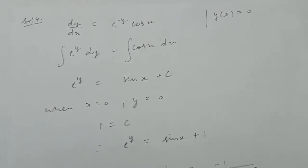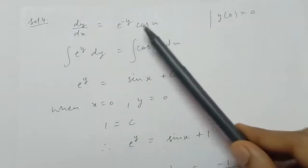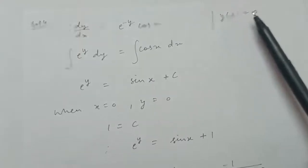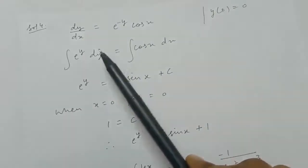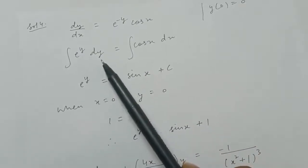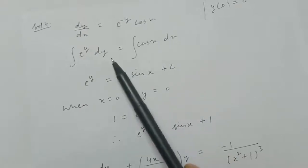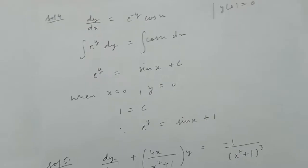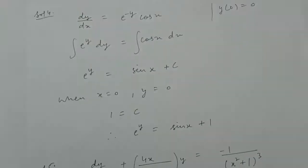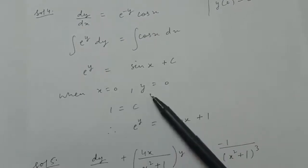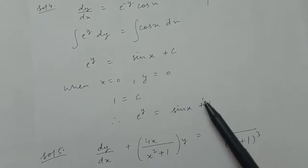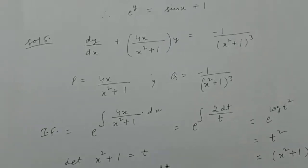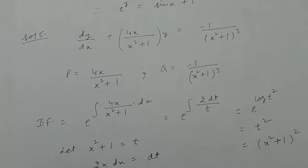Question four: solve to get the particular solution of dy/dx equal to e to the power minus y times cos x, given that y(0) equals 0. Separate the variables to get e to the power y dy equal to cos x dx. Integrate both sides: integral of e to the power y is e to the power y, and integral of cos x is sin x plus c. When x equals 0 and y equals 0, substituting gives e to the 0 equals sin 0 plus c, so c equals 1. Therefore the particular solution is e to the power y equal to sin x plus 1.